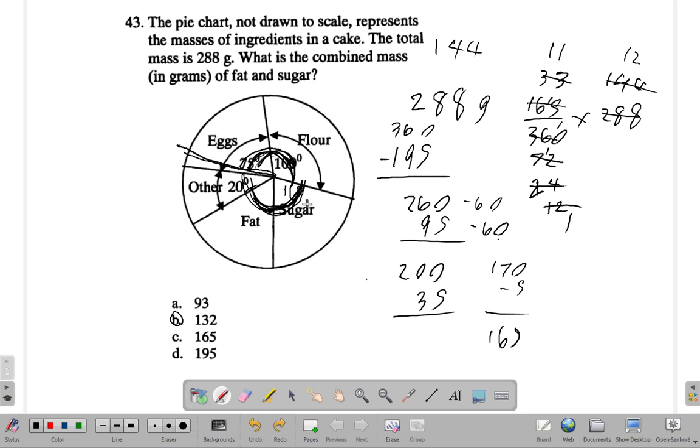If you half the 288, you get 144. You get a little less than 144. So that gives you a clue that the most appropriate answer should be less than 144. The ones that would be out obviously would be those more than 144. It's between 93 and 132, but 93 is too far down, almost like a quarter of a turn.